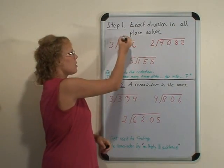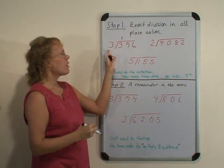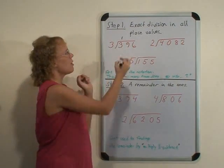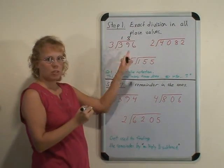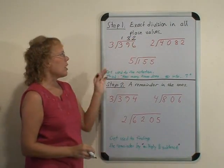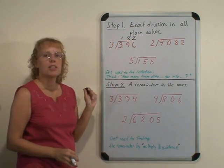So there's 3 hundreds, 9 tens, and 6 ones, and we divide: 3 goes into 3 one time, and of course this means now hundreds. Then 3 goes into 9 tens 3 times, and 3 goes into 6 ones 2 times. The answer is 132.